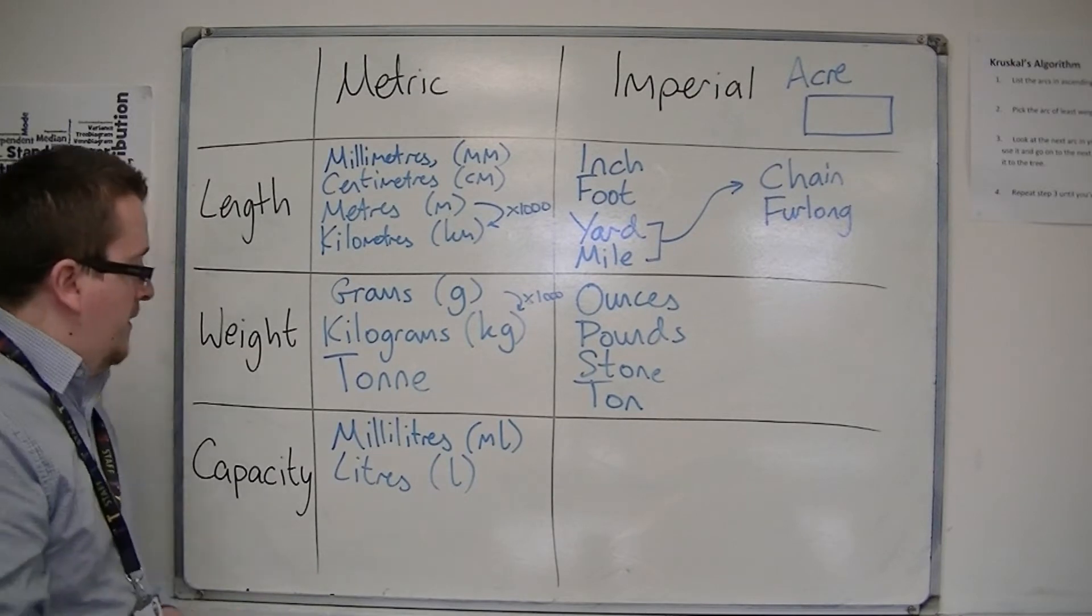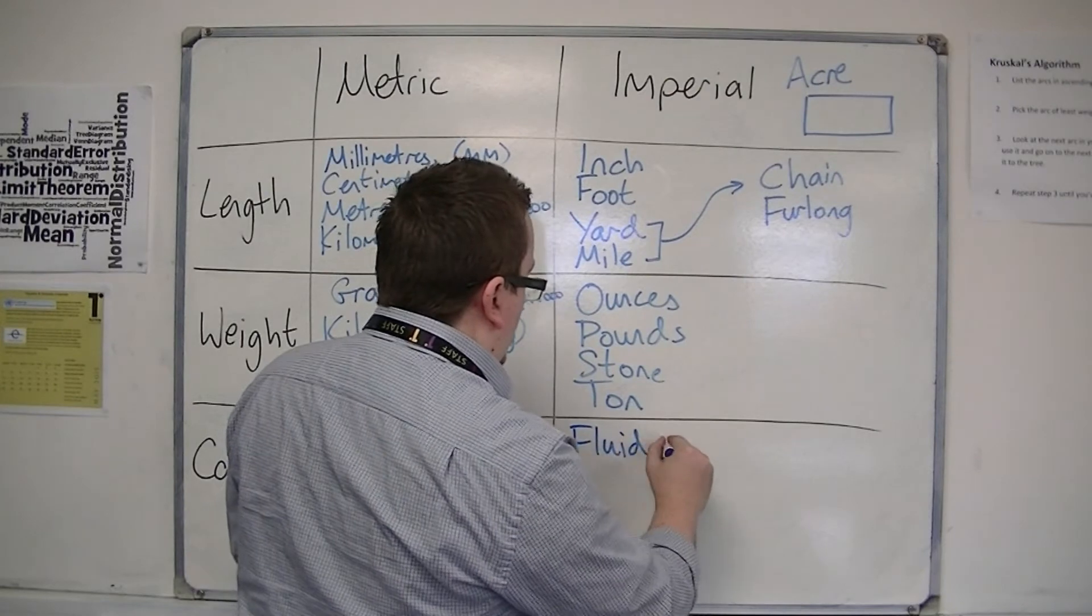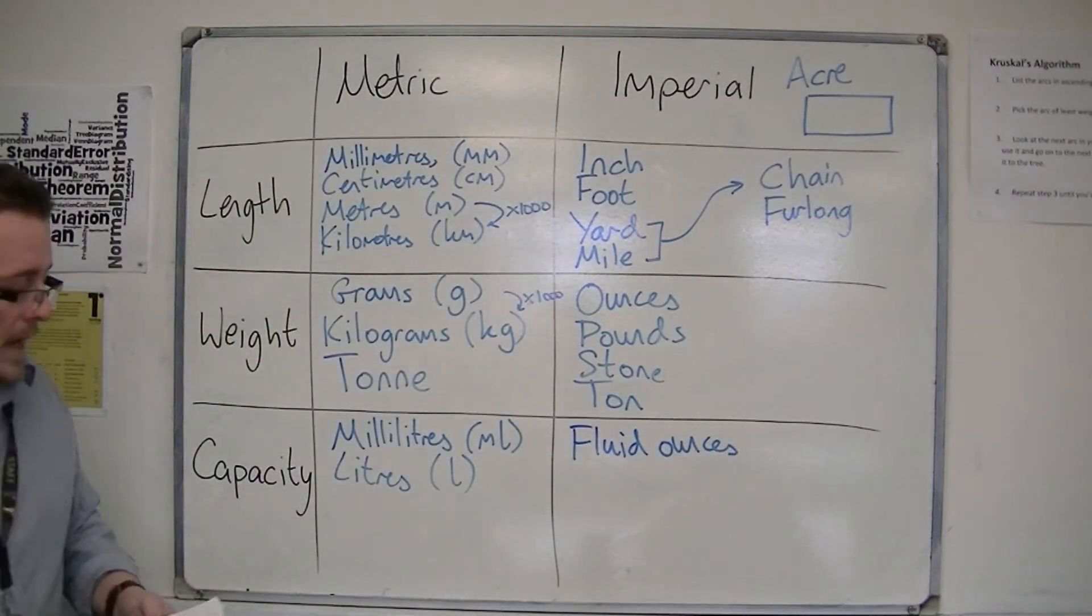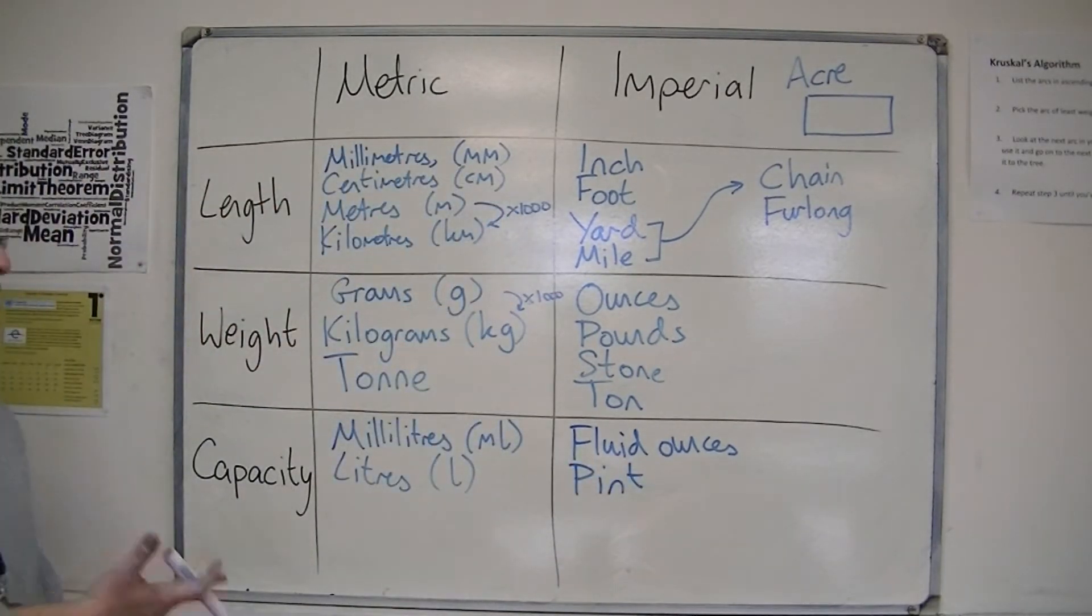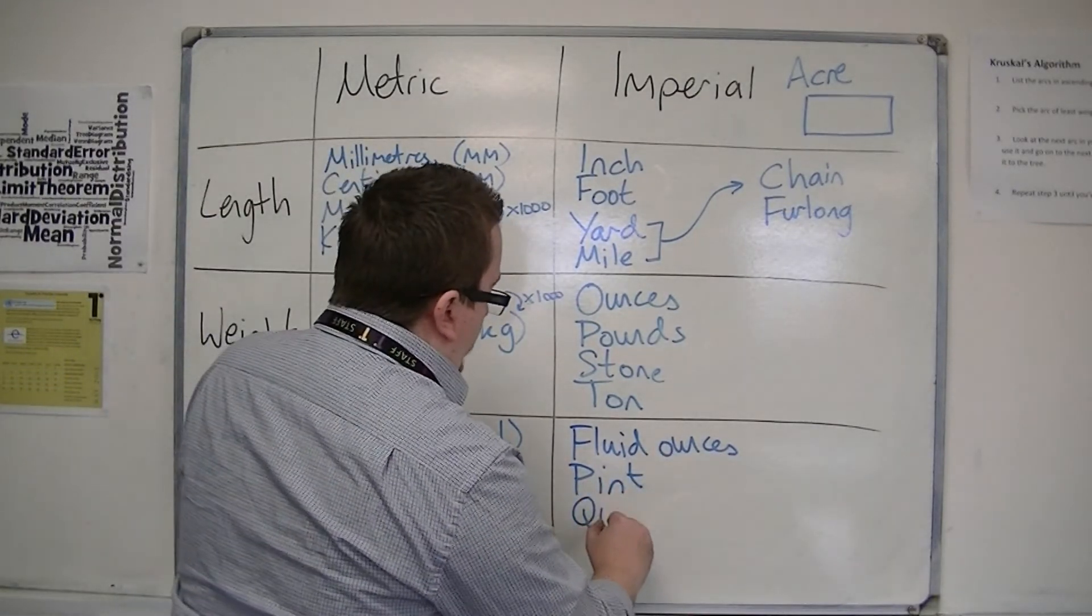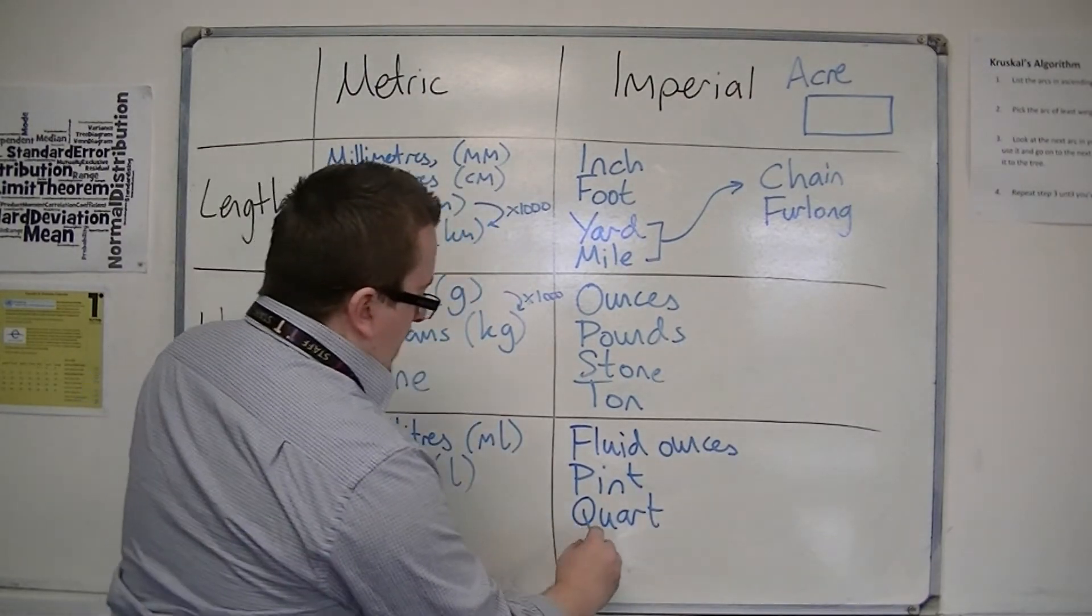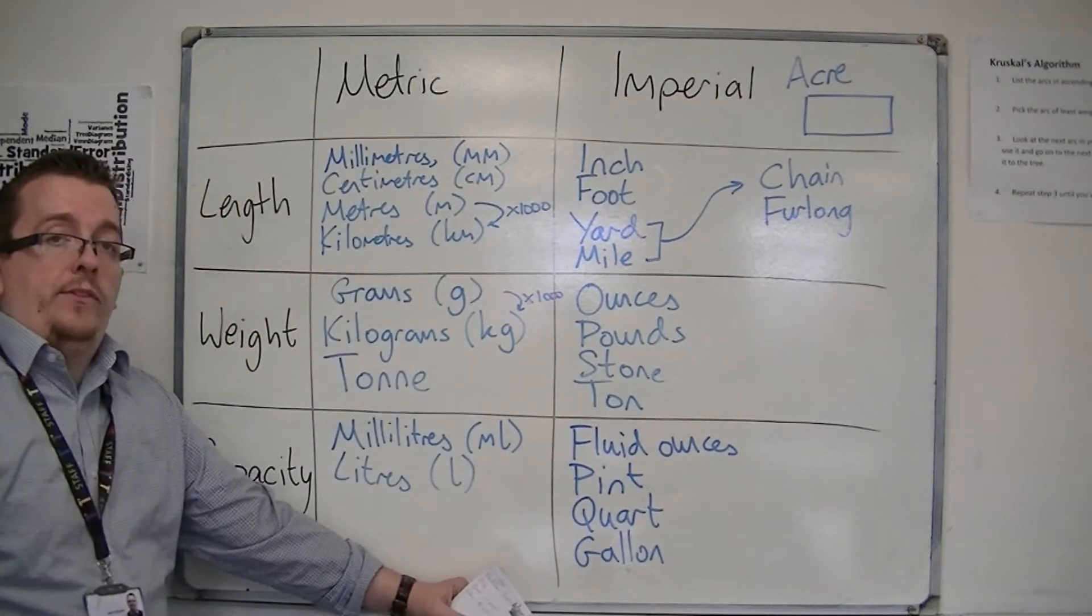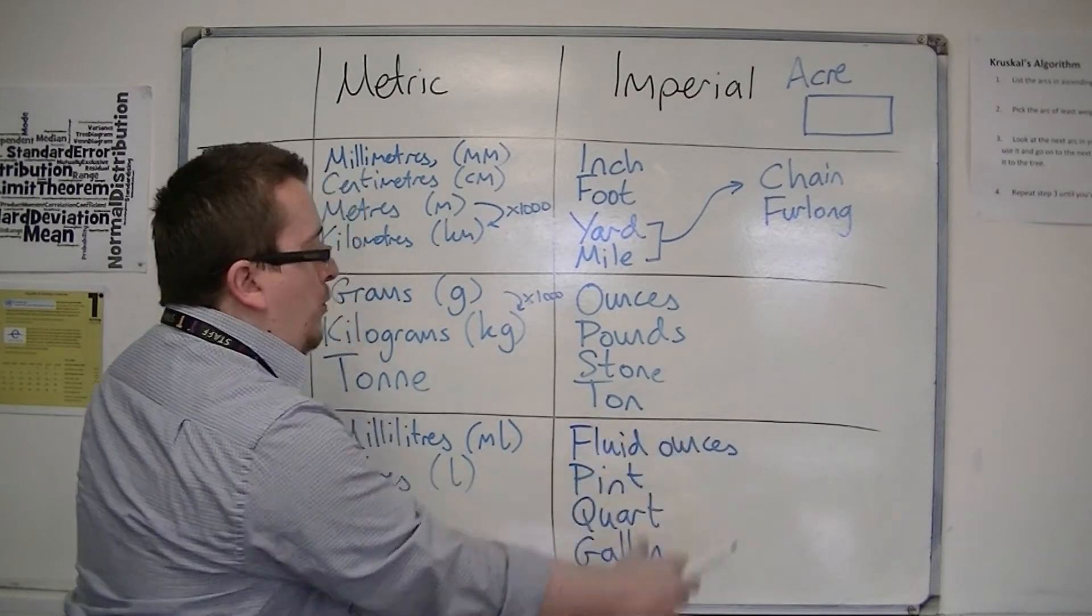And then you've got capacity, so volume. There's fluid ounces, which you may have heard of. Then you've got a pint. I'm sure everyone knows, has heard of a pint. There are 20 fluid ounces in a pint. And then you've got a quart. Two pints go into a quart. And then you've got a gallon. A gallon is eight pints. So you've probably heard of pints and gallons there, maybe not so much quarts and fluid ounces.